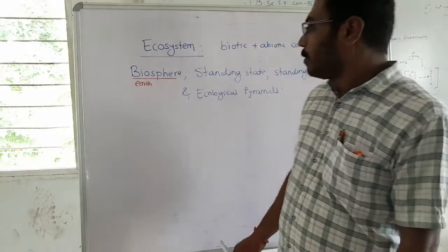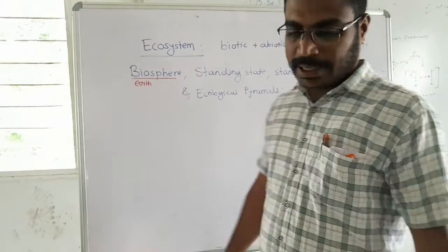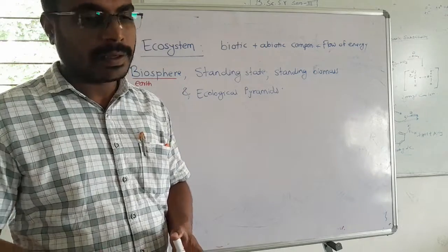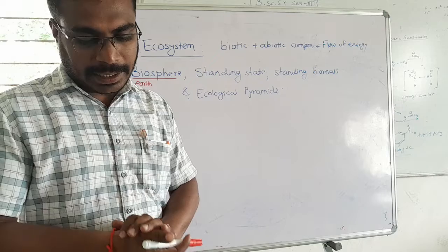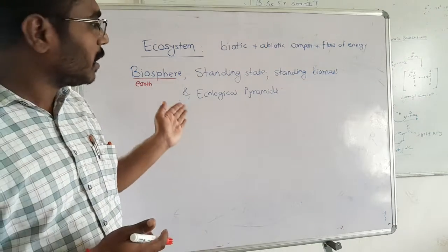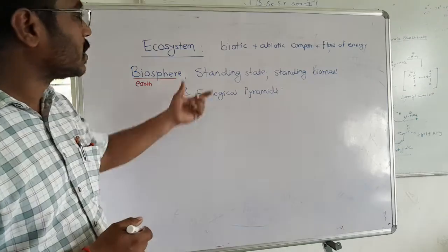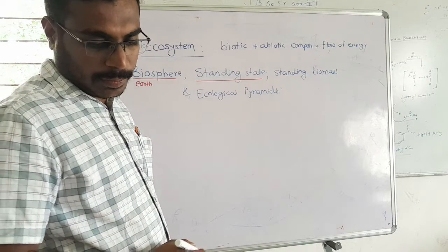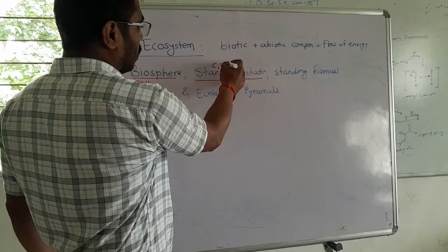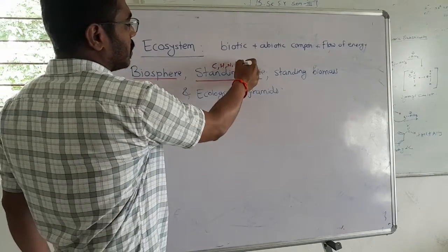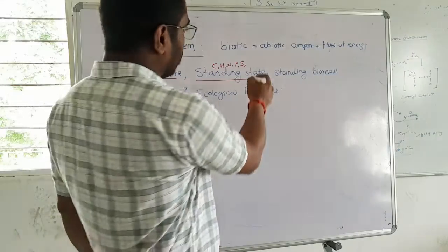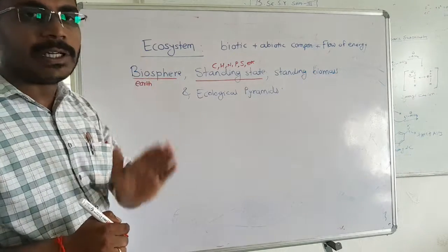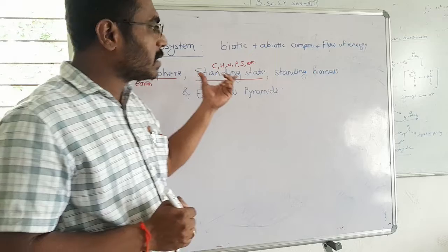Next, we will see what is standing state and standing biomass. The amount of inorganic substances present at any given time in an environment or ecosystem is known as standing state. Inorganic substances include carbon, hydrogen, nitrogen, phosphorus, sulfur, etc., and the amount of these present in a particular ecosystem is called the standing state.